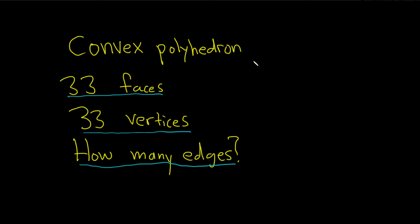So to do this, we can use Euler's formula for convex polyhedra, which basically says the vertices minus the edges plus the faces is equal to 2.